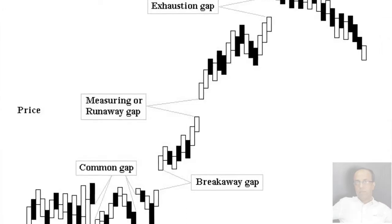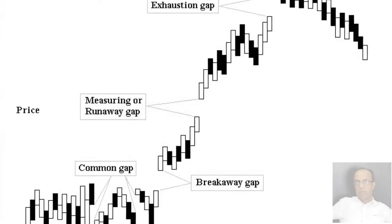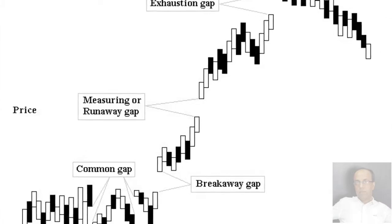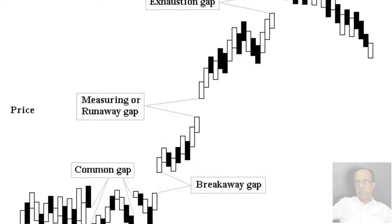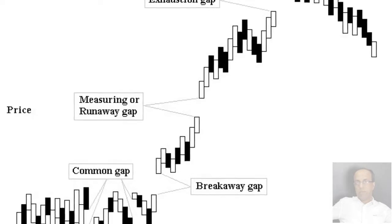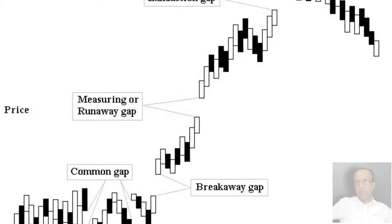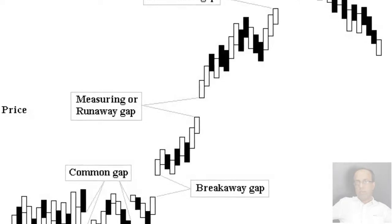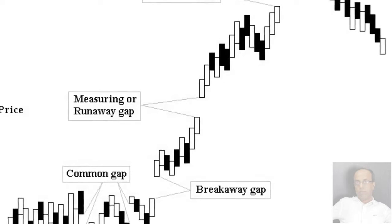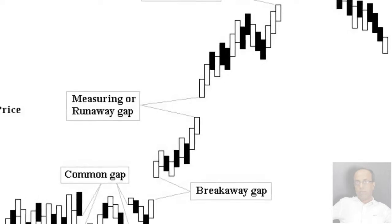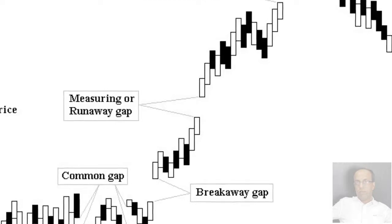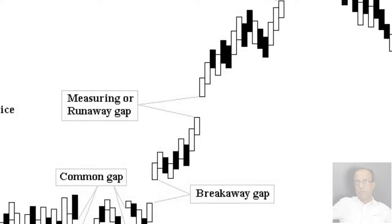The window, also known as disjointed candles, is one of the more powerful candlestick patterns. A window is the same as a gap in the west. For a rising window, the top of yesterday's upper shadow should be under the low of today's lower shadow. A falling window means that the low of yesterday's session — the bottom of the lower shadow — is above the top of today's upper shadow.